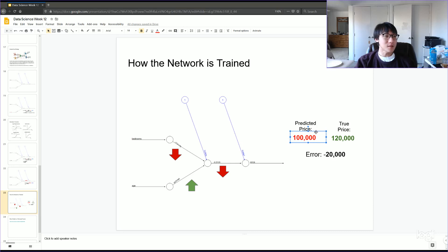And let's suppose further that the true value of the home is $120,000. Well, obviously then my prediction was incorrect. It was $20,000 too low. And so in that case, we would say that the size of the error is minus $20,000.